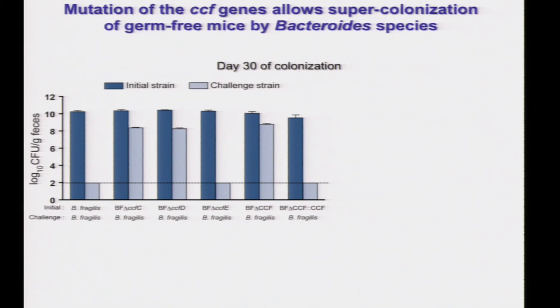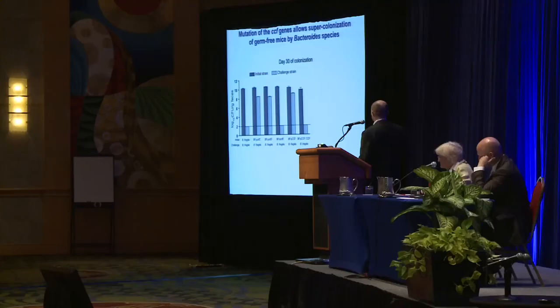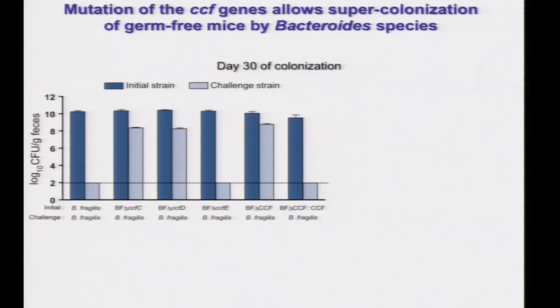We work with organisms we can genetically manipulate, so we can make mutants and test colonization factors. At day 30, the challenge strain is completely cleared in wild-type animals. But if we mono-associate animals with the SusC homolog mutant — which we call CCF-C — or the SusD homolog mutant, CCF-D, we lose this phenotype. If the initial strain does not have this factor, the challenge strain can colonize. CCF-E does not have a phenotype because there's redundancy in that gene. Knocking out the entire operon causes loss of function, and complementing the mutant on a plasmid with the entire operon restores the colonization resistance phenotype.